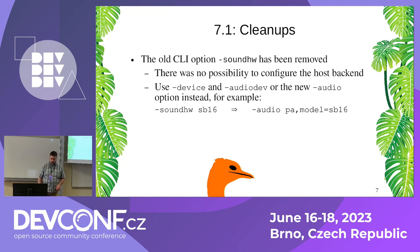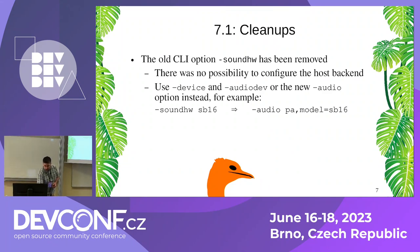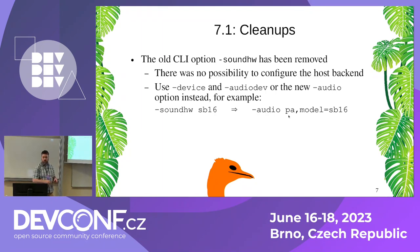It's now advised to use the -device and -audiodev command line options. Or, if you want to do it in short, there's a new -audio command line option where you can do both in one command. So if you were using -soundhw sb16 in the past to configure a Sound Blaster 16 device in your guest, you would now do -audio and then pa for PulseAudio on the host side, then comma model equals sb16. This one command now wires up both the guest side and the host side.